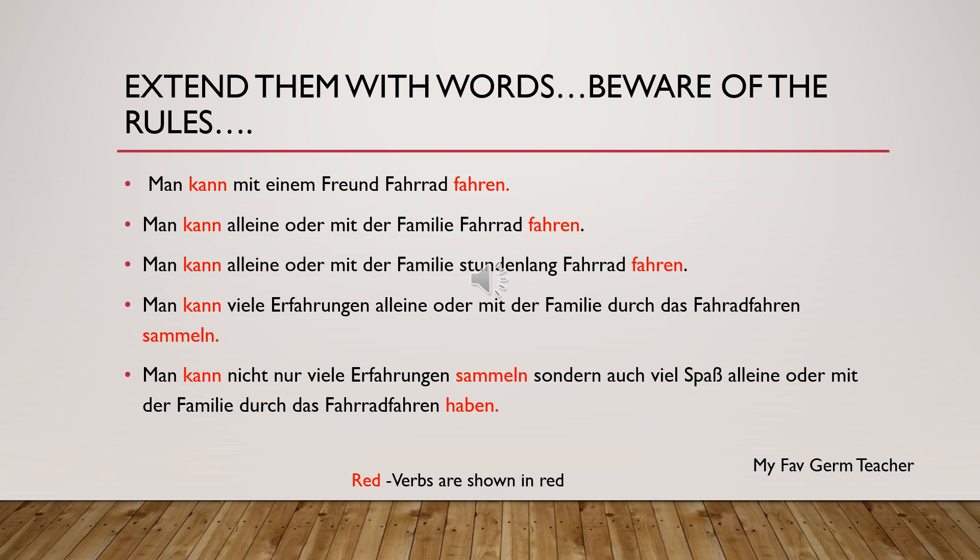The first example is 'Man kann mit einem Freund Fahrrad fahren', which means a person can ride a bicycle with a friend. The next sentence: 'Man kann alleine oder mit der Familie Fahrrad fahren', which means a person can ride a bicycle alone or with the family, for hours together.